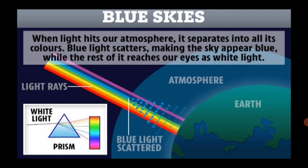When light hits our atmosphere, it separates into all its colors. Blue light scatters, making the sky appear blue, while the rest of it reaches our eyes as white light.